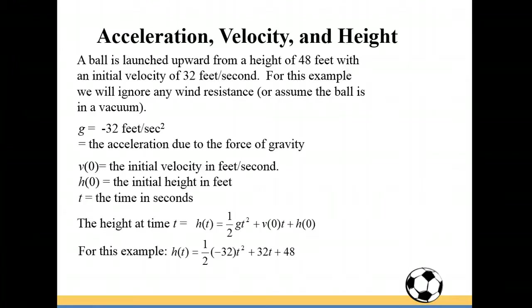For this example our initial height was 48, our initial velocity was given as 32 feet per second, and the gravity constant is negative 32 feet per second squared. So I've plugged in all the constants that we need to, and now we just need to simplify that. So we have negative 16 t squared plus 32 t plus 48.